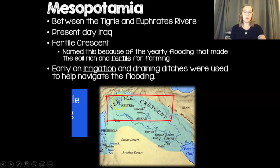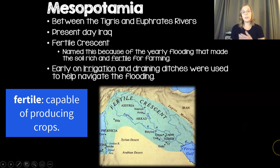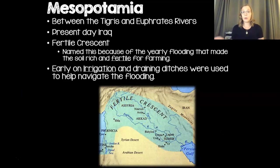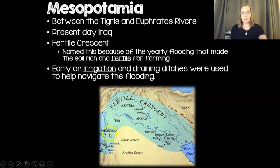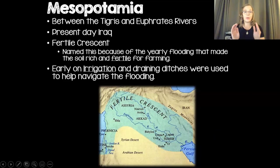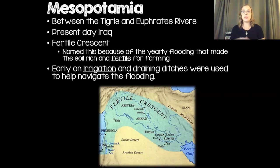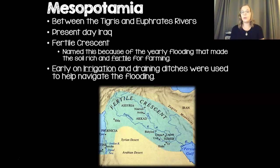Fertile, because if you know what fertile means, it means something is good for growing. So if soil is fertile then it's really great for agriculture, which makes sense why a civilization popped up here. You've got two rivers which makes the land very fertile and perfect for farming. The crescent part is just because it's shaped kind of like a crescent. The two rivers were pretty consistent, with yearly flooding that left nutrients in the soil, keeping it good for farming.